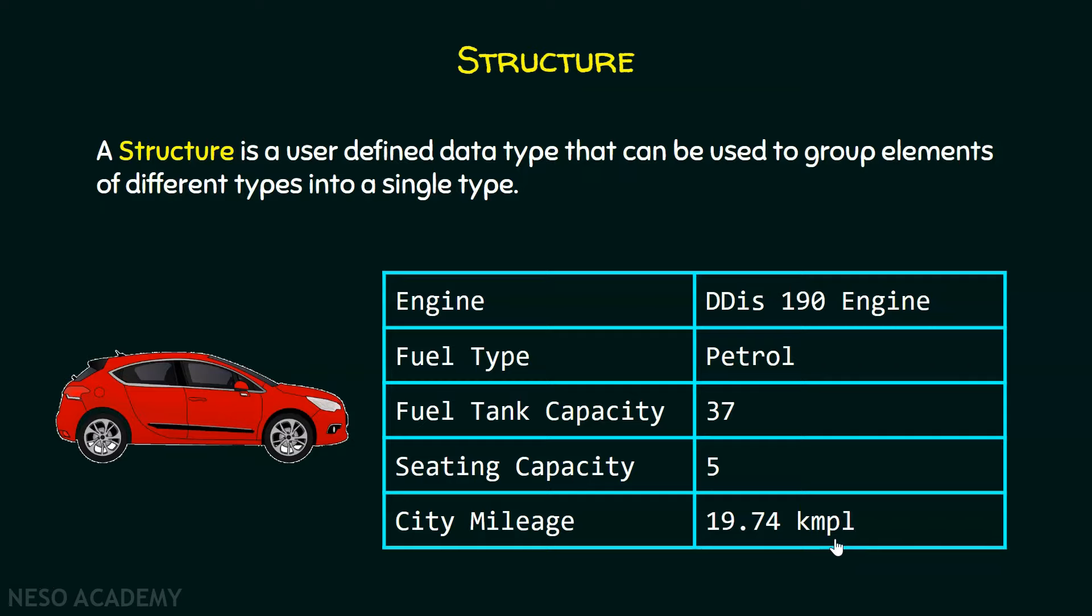We can see here that these are the specifications of a particular car. And we have also learned that if we try to store all these specifications individually for different cars, then it will be a very time consuming task. We need some way in which we would be able to group them together into one type. And then using variables, we can access and assign values to them.